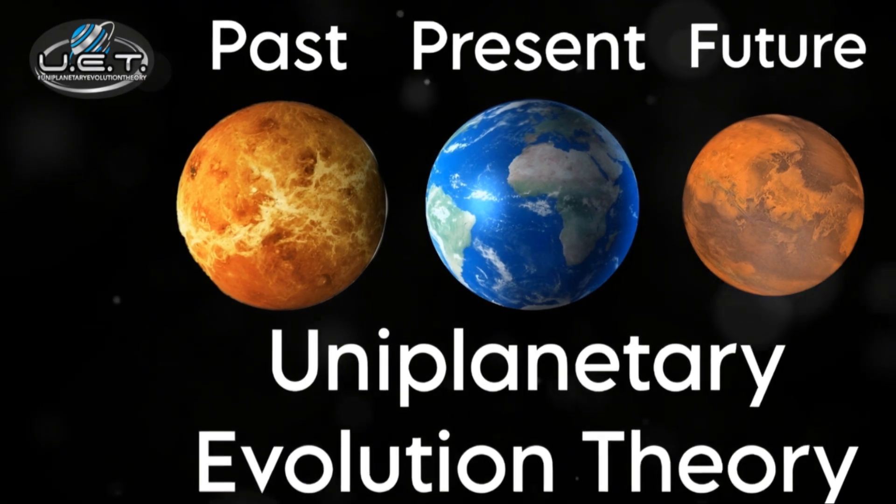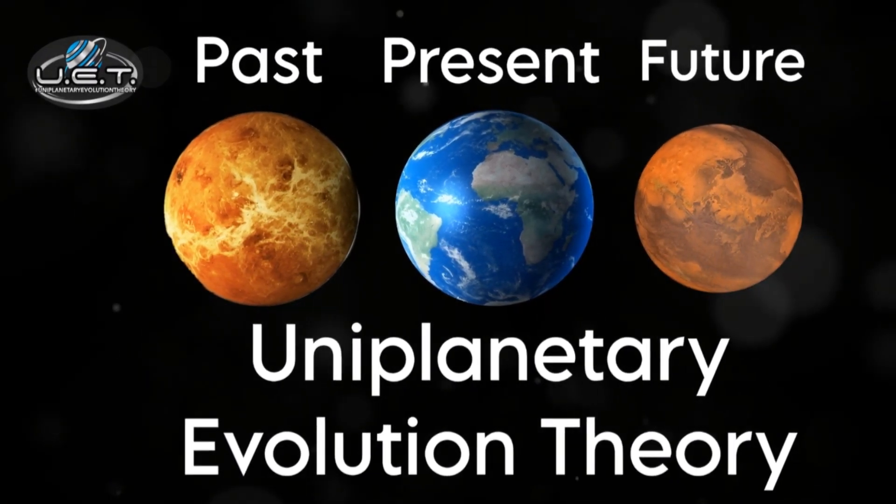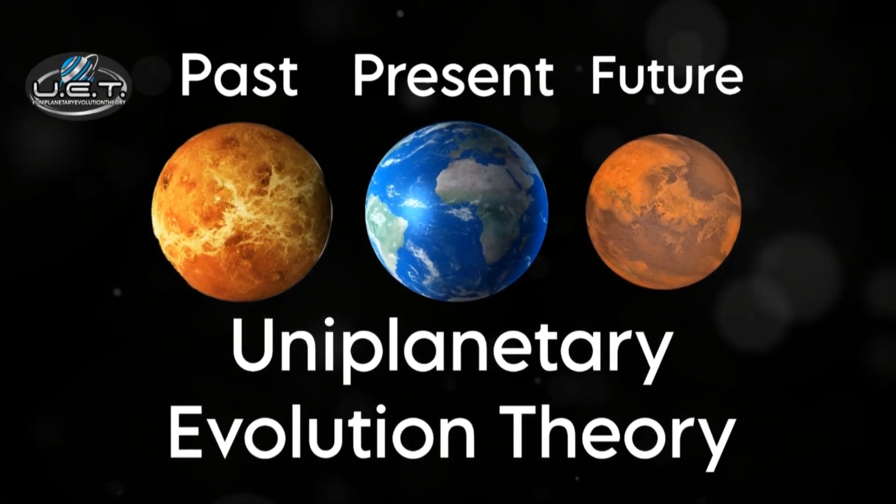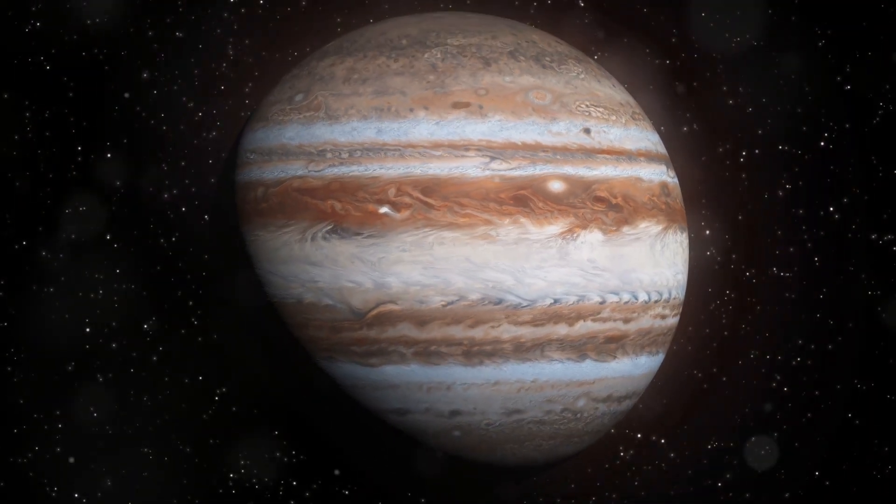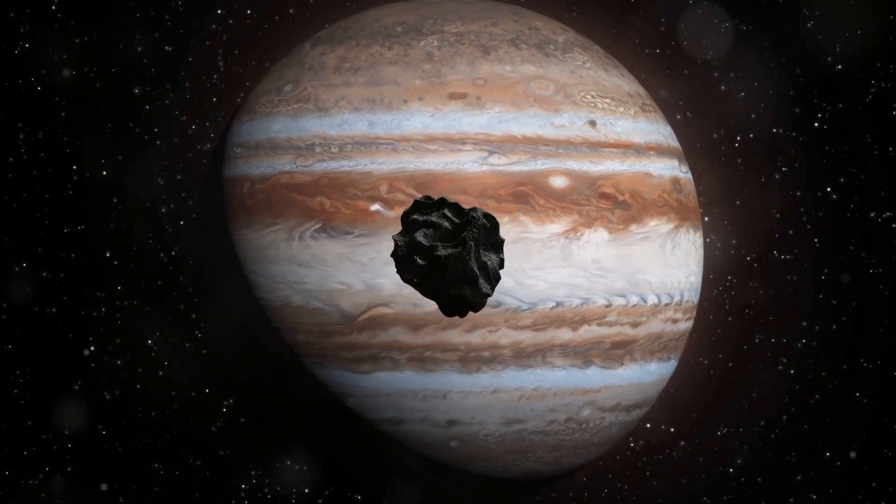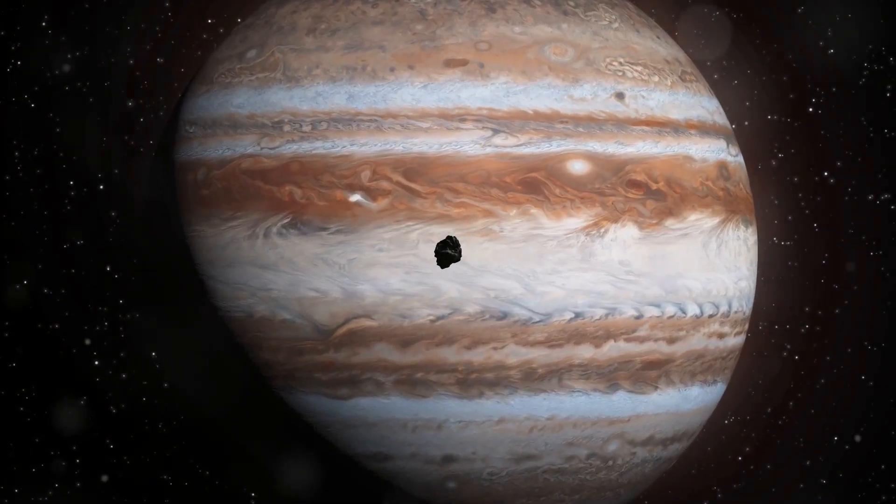Mars? It's Earth but after a catastrophic destruction. Venus? Earth in its younger days before it embraced liquid water. And Jupiter? Well, according to this theory, Jupiter's immense pressure could one day ignite its hydrogen, setting off a cataclysmic chain reaction that turns Earth into a Mars-like barren world.